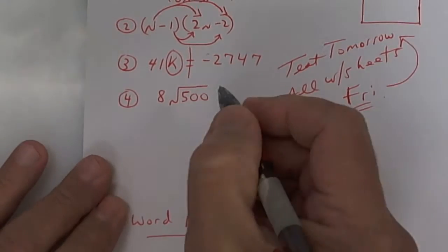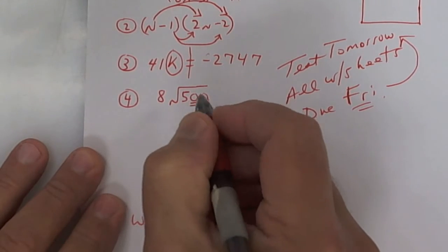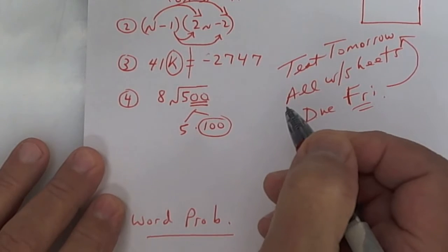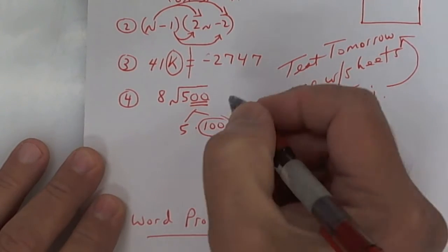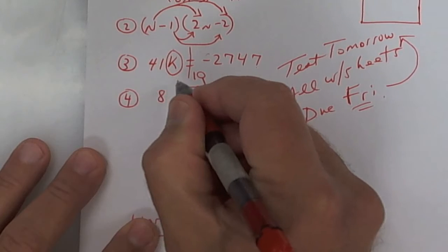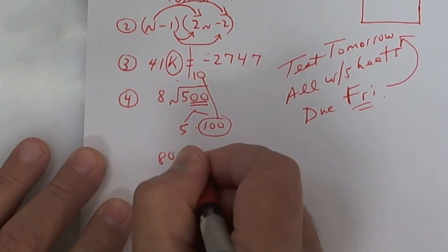This one right here you can break it down by twos, but you should see that this is 100, two zeros. So this is basically 5 times 100, and you should know that 100 is a perfect square. So this right here is going to be the square root of 100 is 10, so take a 10 out and then multiply whatever you take out. So the answer is going to be 80 square root of 5, 8 times 10.